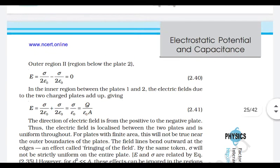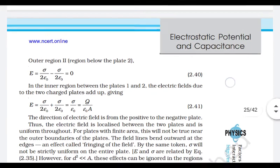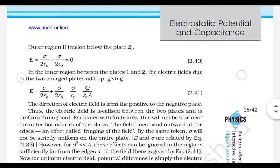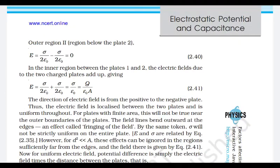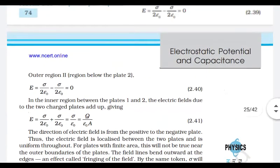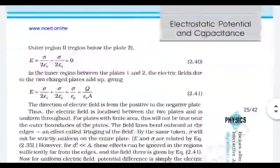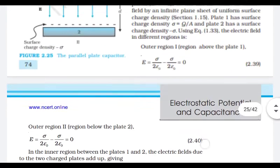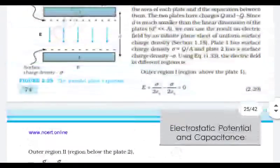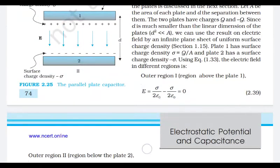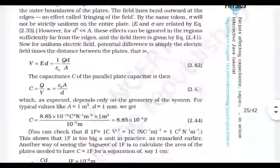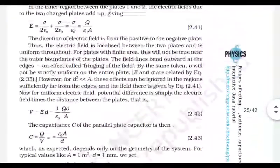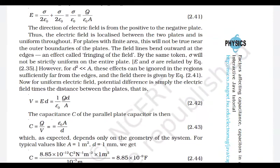This gives E = σ/ε₀ inside the plates. After putting sigma = Q/A, we get E = Q/(ε₀A). We use ε₀ because there is vacuum between the plates. The direction of electric field is from the positive plate to the negative plate, so the direction is from top to bottom in this case.